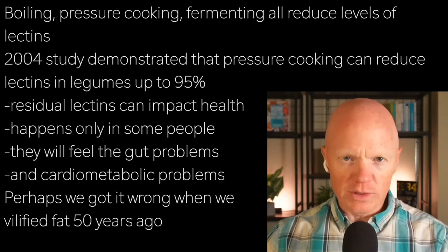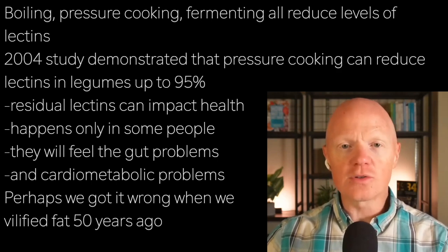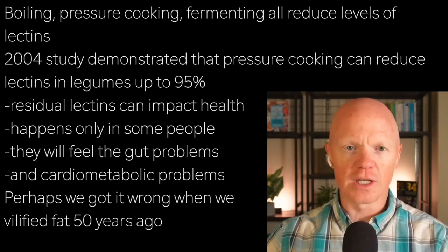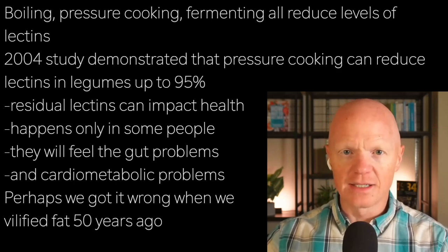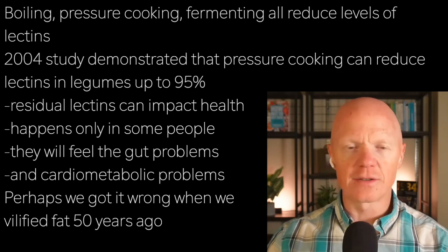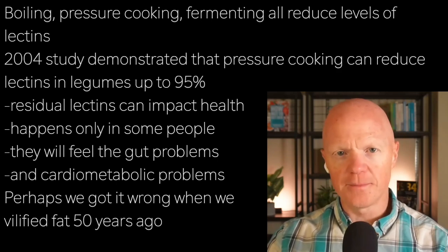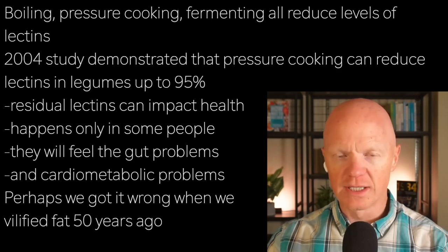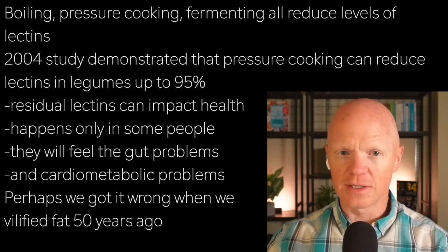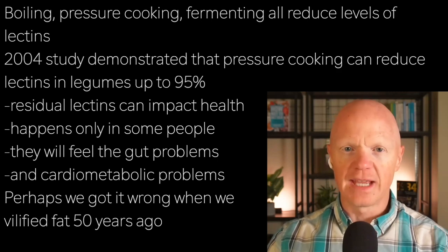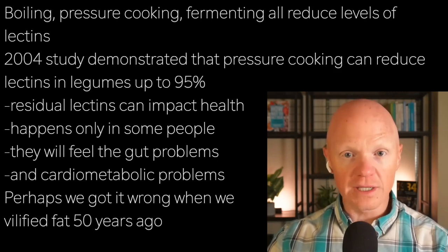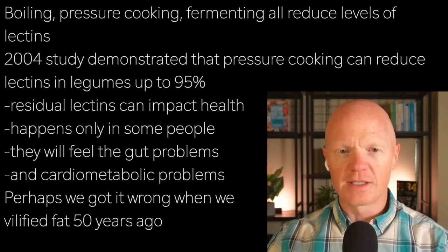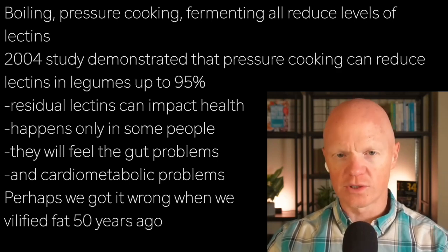We humans have learned that we eat plants and they can hurt us, so it's no surprise we've developed methods to reduce lectins. Cooking methods like boiling, pressure cooking, and fermenting will significantly reduce lectin content. A 2004 study in the Journal of Agricultural and Food Chemistry demonstrated that pressure cooking can decrease lectin levels in legumes by up to 95%. You can't get rid of them entirely, but these residual lectins persist, and their ability to cause effects is real. The degree to which various people experience a response is individual — those more susceptible need to be the most careful.